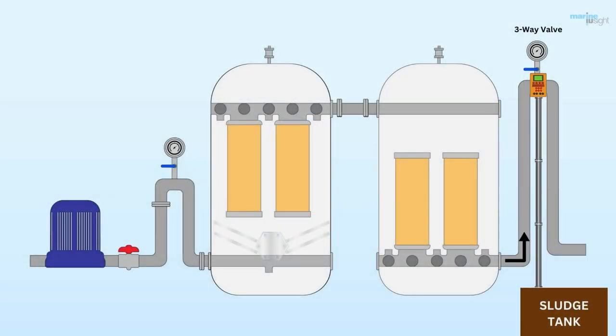The three-way valve inlet is from the OWS discharge, where one outlet is overboard and the second outlet is to the OWS sludge tank. When OCM gives an alarm, the three-way valve discharges the oily mixture in the sludge tank.